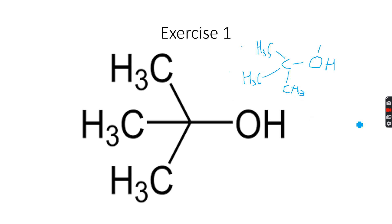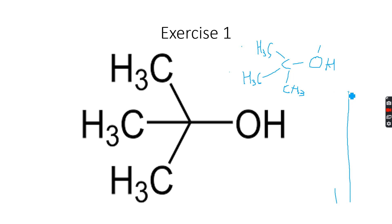This peak will have a certain height, and the singlet peak due to the OH group will have a different height — possibly even taller. The difference in heights reflects that nine hydrogen atoms contribute to one peak and one hydrogen atom to the other, giving a 9:1 ratio.